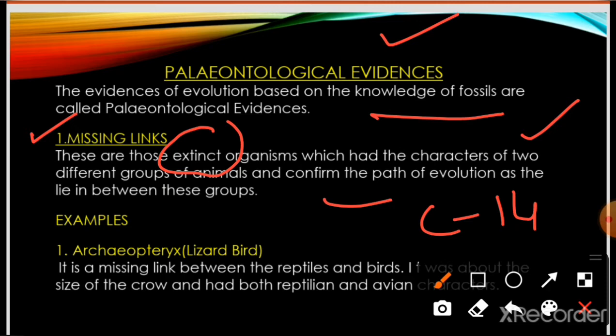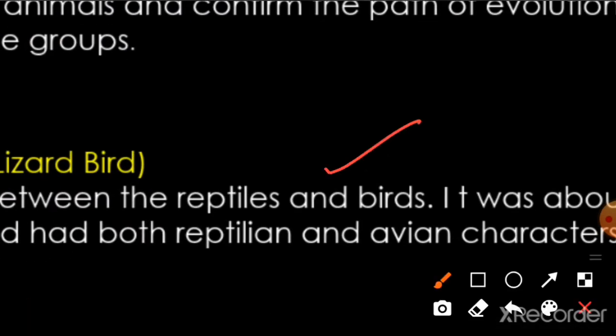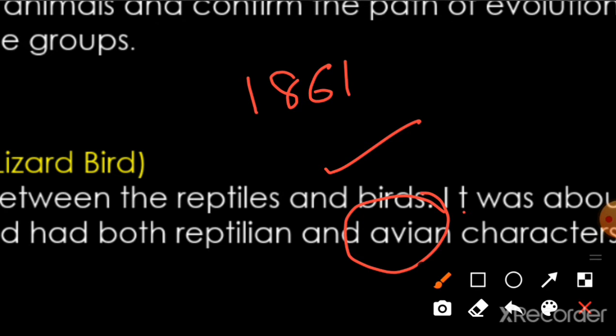An example is the lizard-bird, which we call Archaeopteryx. Archaeopteryx is a missing link between the reptiles and birds. It was discovered in 1861 AD by Wagner, from the upper Jurassic limestone rocks that were approximately 180 million years old.